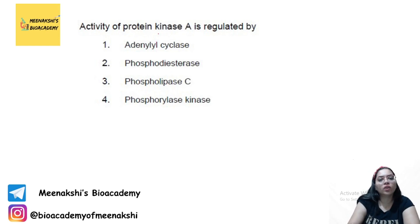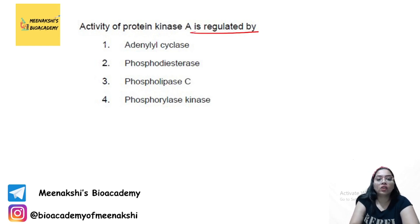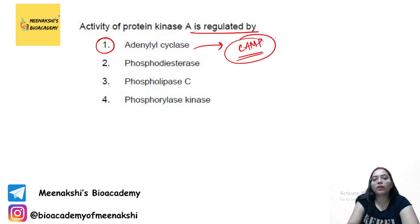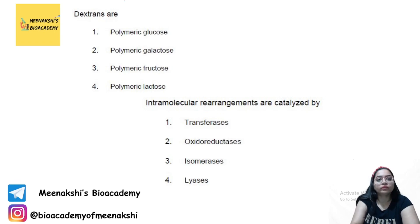The activity of protein kinase A is regulated by adenylyl cyclase, because adenylyl cyclase produces cyclic AMP (cAMP), and cAMP then activates protein kinase A. Dextrans are anhydrous polymers of glucose.